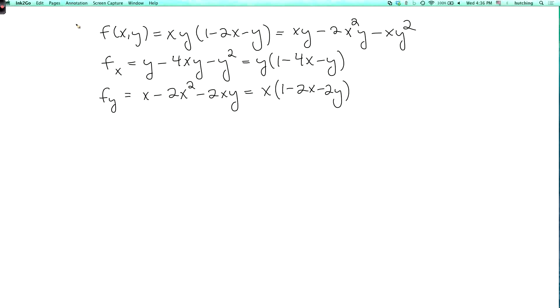Now we set this equal to 0. So fx equals 0 implies that y equals 0 or 1 minus 4x minus y equals 0. Now the case y equals 0 is not going to give us the maximum because there f is equal to 0. So we can rule out that possibility.